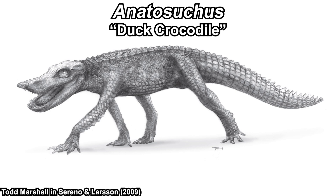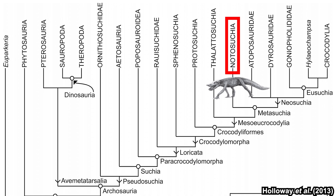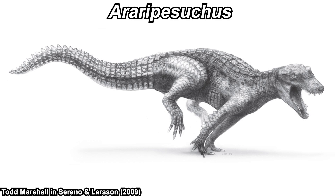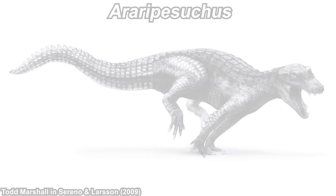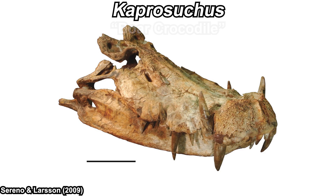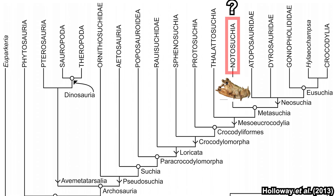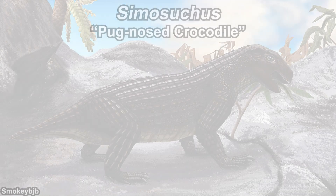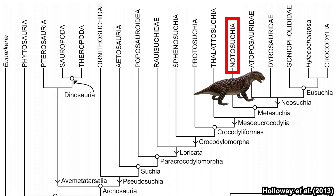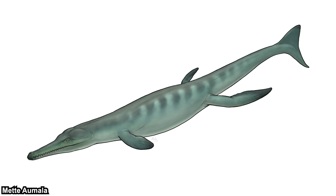Let's look at some famous fossils people call crocodiles and see where they fall in the phylogenetic tree. Anatosuchus, known as the 'duck crocodile,' is a Notosuchia — a stem group inside the Metasuchia clade. Araripesuchus, named after the Araripe Basin in Brazil, is also Notosuchia — not Kaprosuchus as some articles and YouTube videos incorrectly label it. Kaprosuchus, meaning 'boar crocodile,' is also Metasuchia. Simosuchus, the pug-nosed crocodile that doesn't really look like a crocodile, is still Notosuchia.